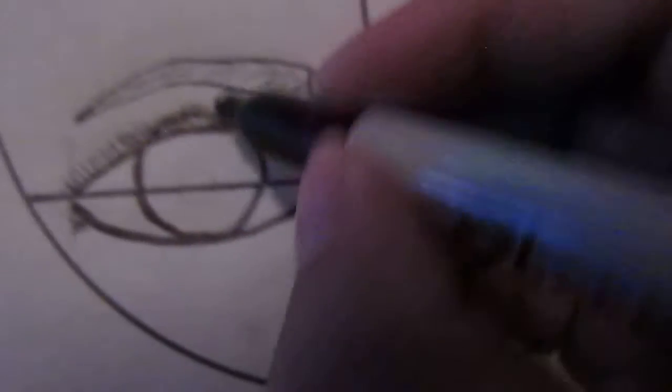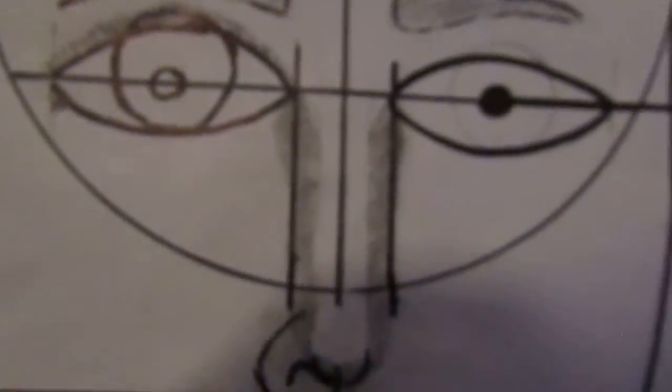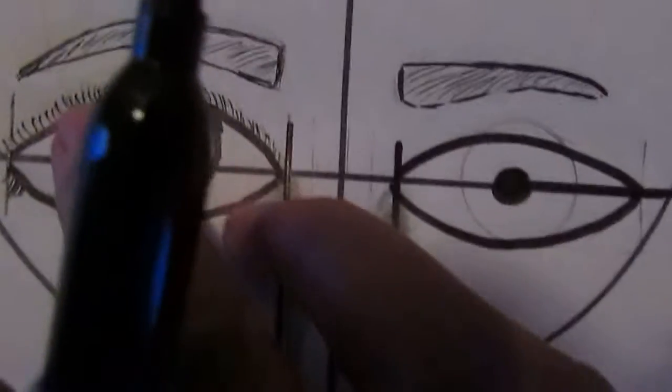Then what I'm going to do right here in the middle, I'm going to create—I just created my pupil. And now I'm going to create my iris, and then when you do that you're going to go ahead and shade in the iris right here.